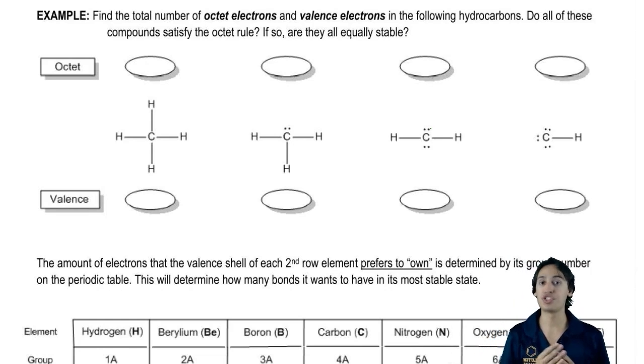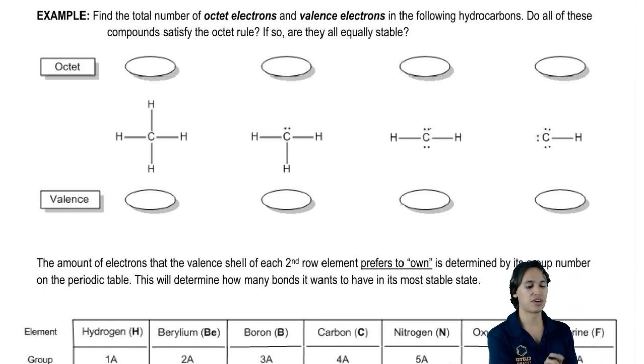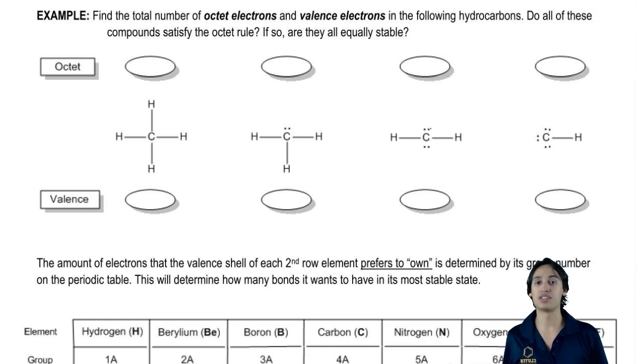So the first thing I want you guys to do, we just talked about the octet rule. What I want you to do is figure out how many octet electrons each of these carbons would have. Go ahead and start off from the left right there and pick out how many octet electrons does it have?